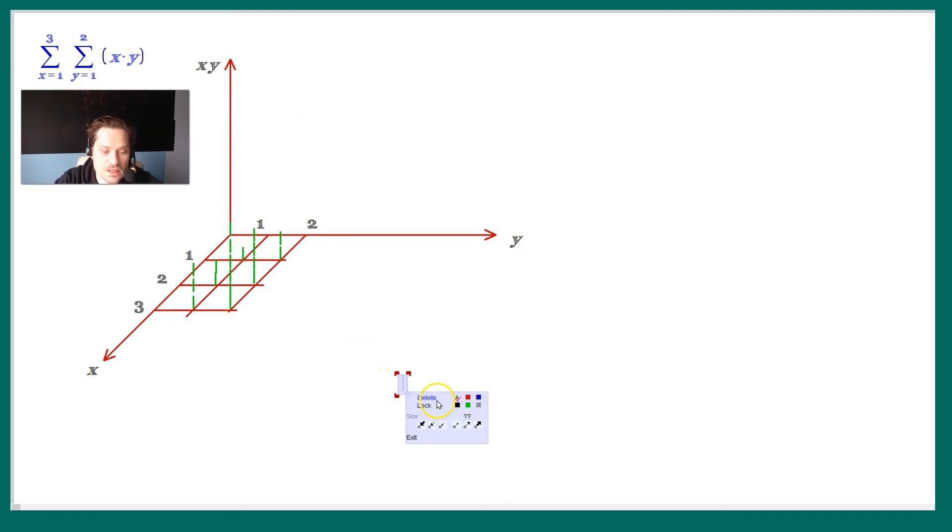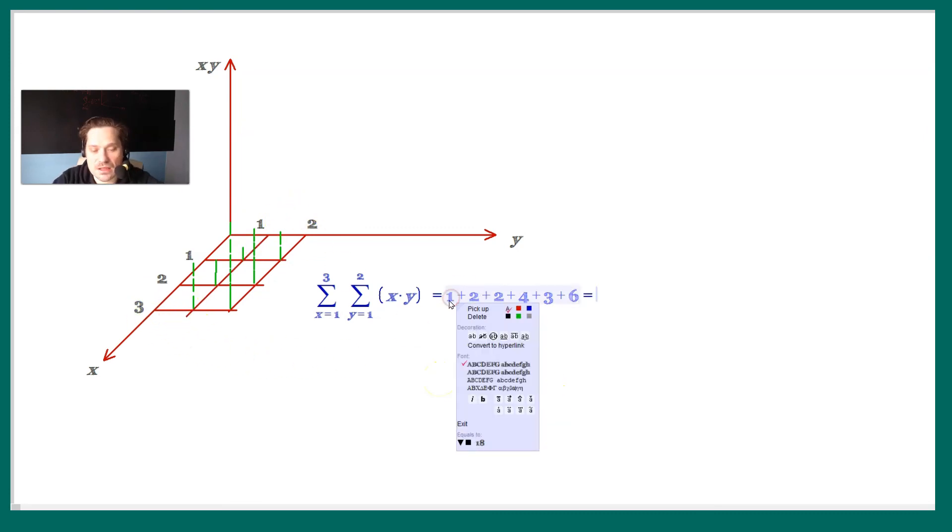So now that we have all of these little segments rising out of the xy surface representing the different values of x multiplied by y, let's calculate the sum. The sum would be: 1 times 1 is 1, plus 1 times 2 is 2, plus 2 times 1 is 2, plus 2 times 2 is 4, plus 3 times 1 is 3, plus 3 times 2 is 6. So it's going to be 18 essentially.